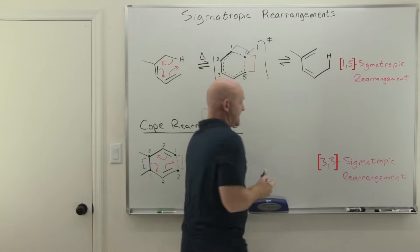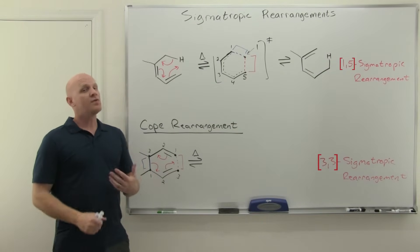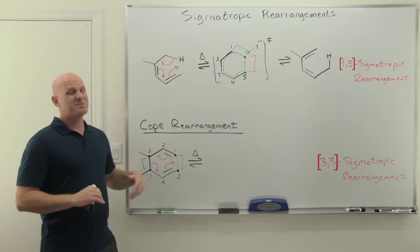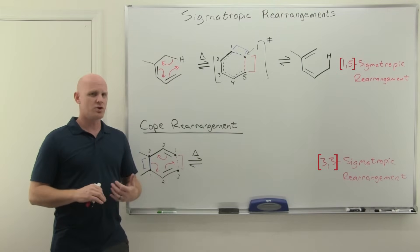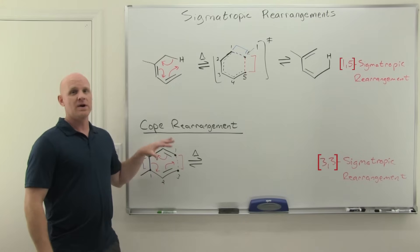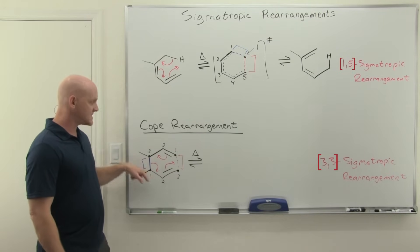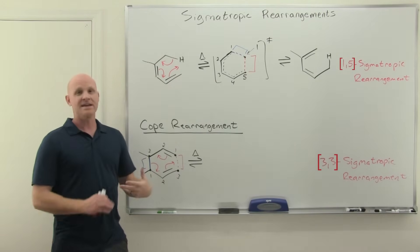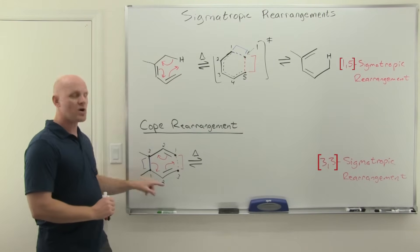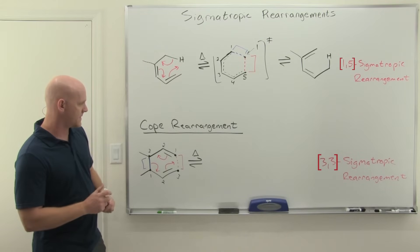That's what a COPE rearrangement is. There's also what's called a Claisen rearrangement, and a Claisen rearrangement is also a 3-3 sigma-tropic rearrangement. The key difference is that the Claisen is going to involve one of these six atoms being an oxygen — so it'll be an ether reactant — whereas the COPE is specifically when they are all carbon atoms.